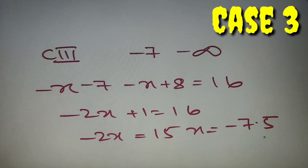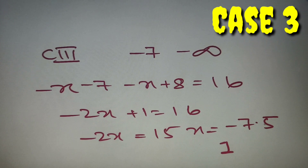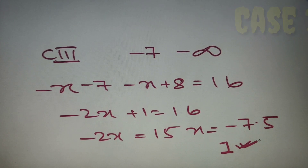We now have all three values: case 1 gives x = 8.5, case 2 gives no solution, and case 3 gives x = -7.5. Adding all the values: 8.5 + (-7.5) = 1. So for the equation |x + 7| + |x - 8| = 16, the sum of all possible values of x is 1, which is option B.